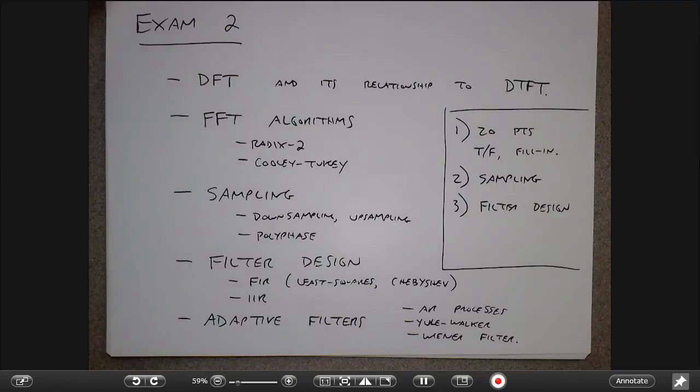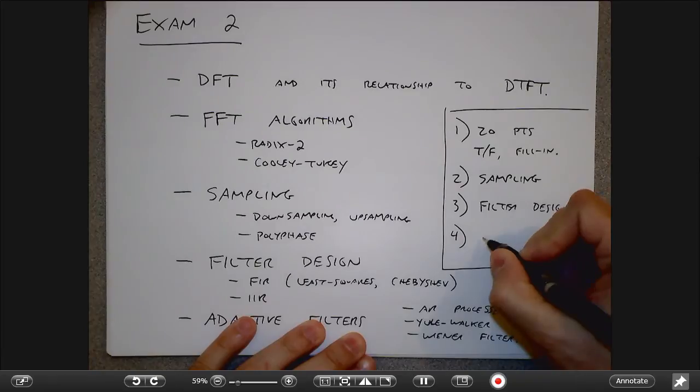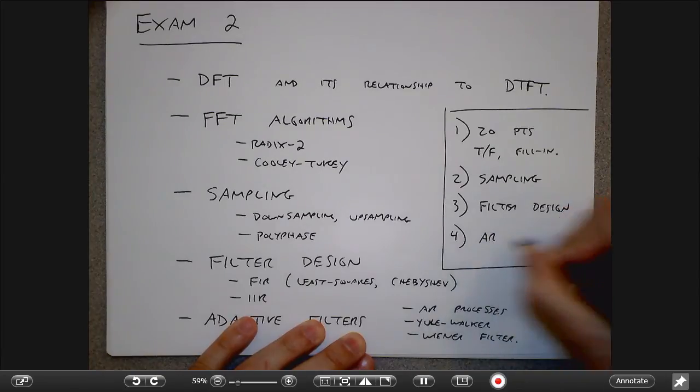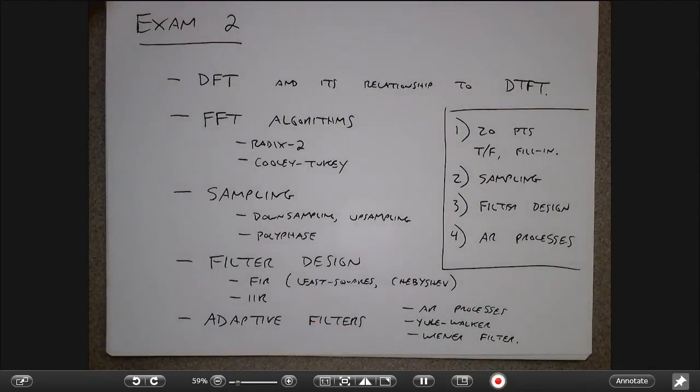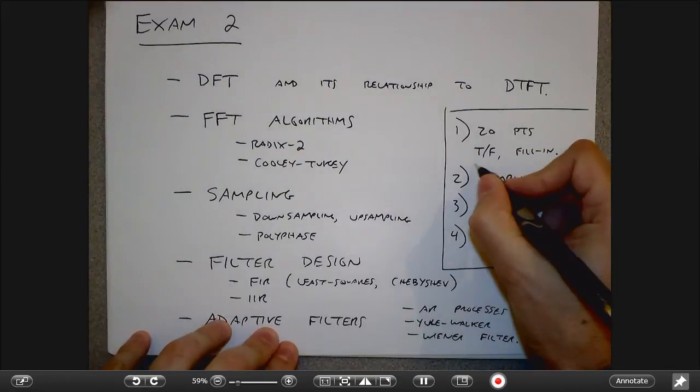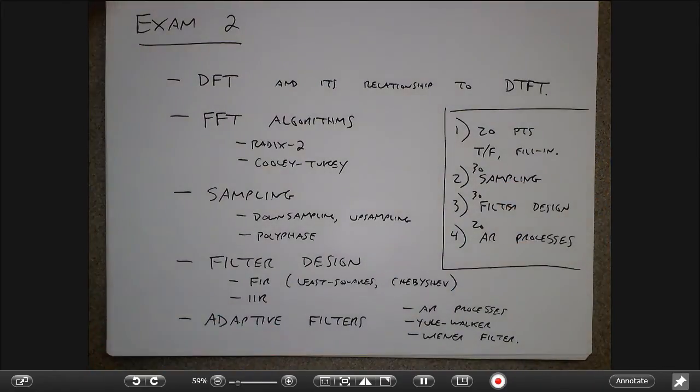You can look and see the kind of filter design problem that I asked on the previous exam to give you some sense of the kinds of stuff that I can ask you to set up. And then the last problem is on AR processes. So kind of similar to the stuff that you're working on in the current homework. If you did the past few homeworks and you understood them, then this exam should follow kind of along with those homeworks. So I think this is 30 points, this is 30 points, this is 20 points.